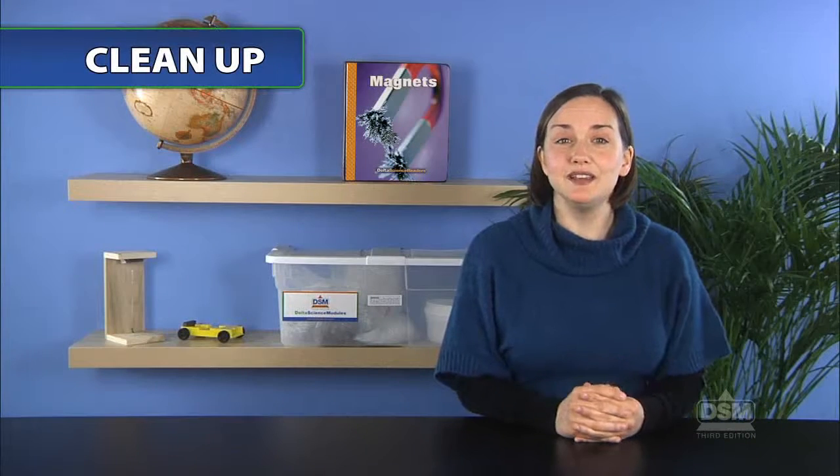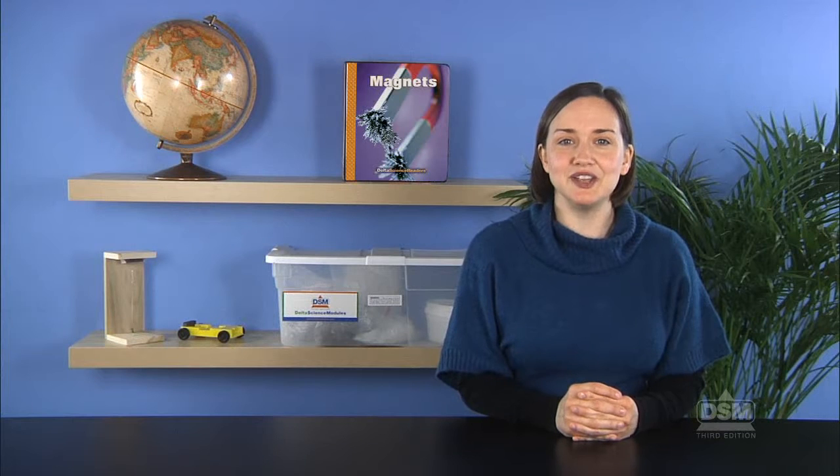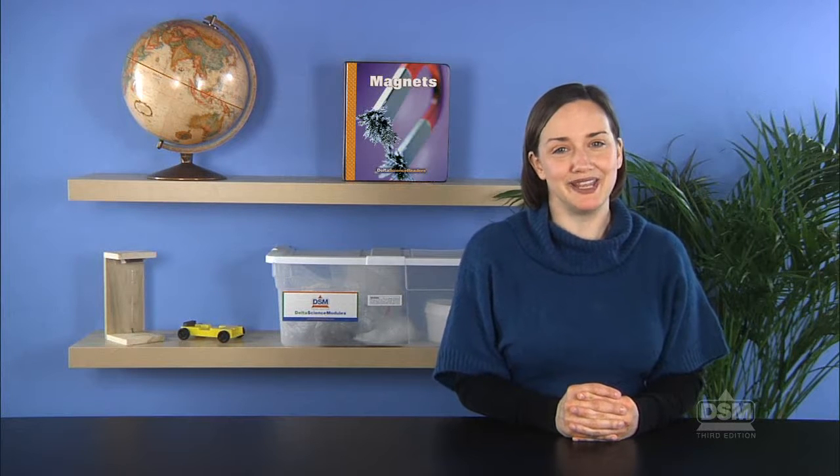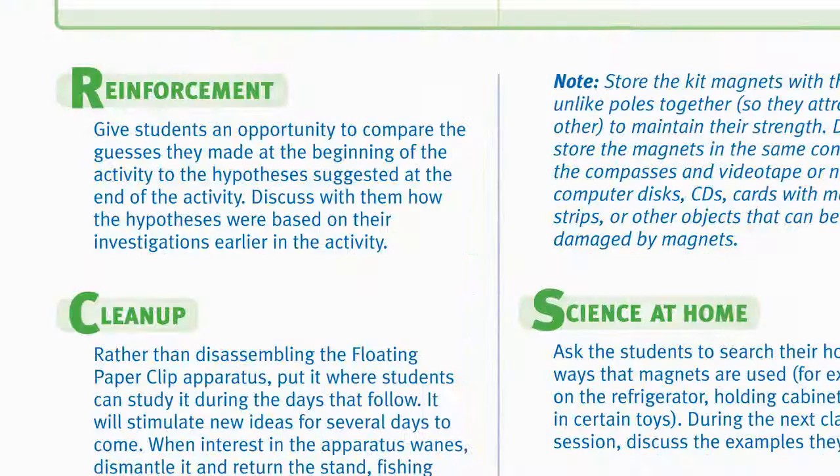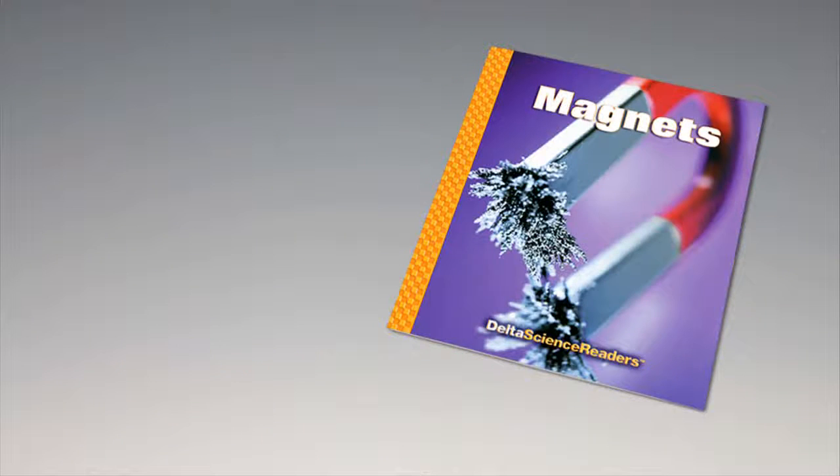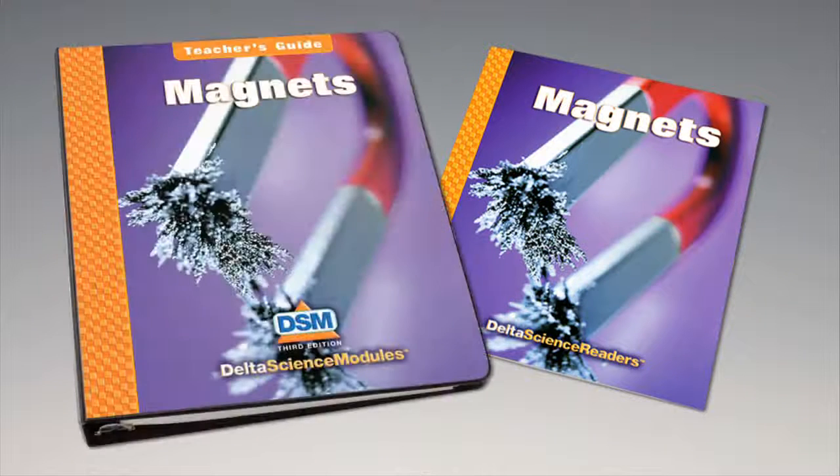To conclude the activity, pour the iron filings back into their container and return them along with the cups and magnets to the kit. For science background, reinforcement activities, curriculum connections, and information about the Delta Science Reader, please consult your DSM teacher's guide.